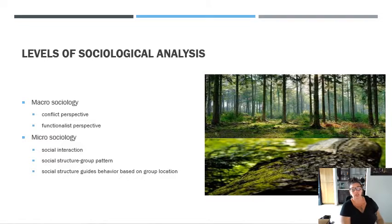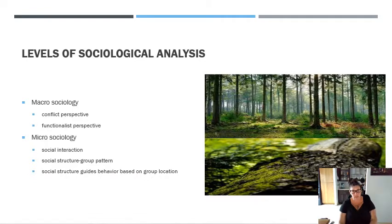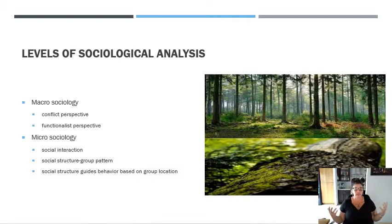The first thing we want to talk about is the difference between macro sociology and micro sociology. Macro and micro sociology are different perspectives of analysis. Macro is going to be large-scale and micro is going to be small-scale or detailed perspective. You can look at the forest, or you can look at the trees themselves and do an analysis of the detail within each individual tree, or you can stand back and look at the trees as a forest and as a whole. That's the difference between macro and micro — we just apply it to society.